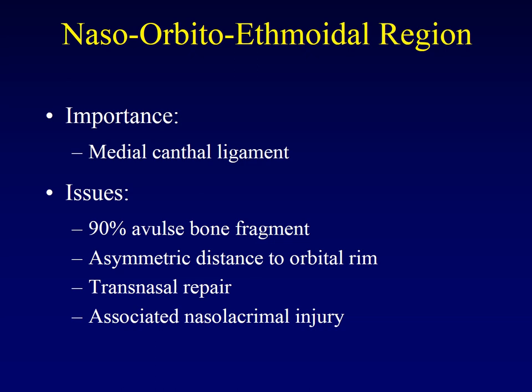The importance of the naso-orbital ethmoidal region is that the medial canthal ligament attaches there. If the medial canthal ligament is disrupted, it can result in asymmetry of the medial canthal notch, which has important cosmetic effects. If severe enough, you can even disrupt the anchor point of the globe and end up with diplopia. Fortunately, 90% of the time a small bone fragment is avulsed along with the medial canthal ligament injury, and it's that bone fragment we look for on CT.